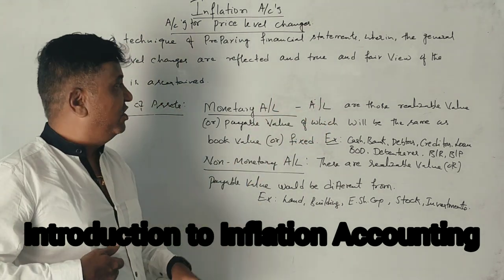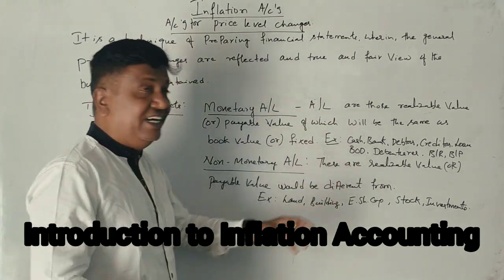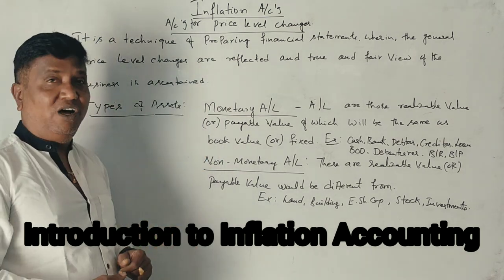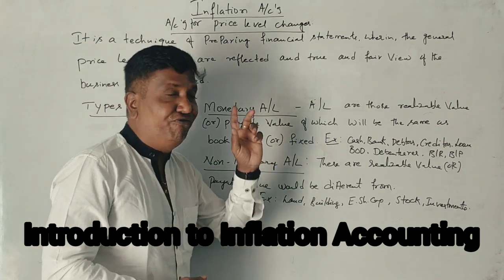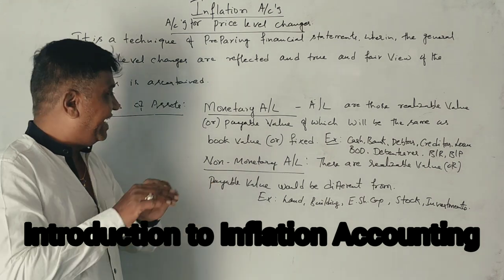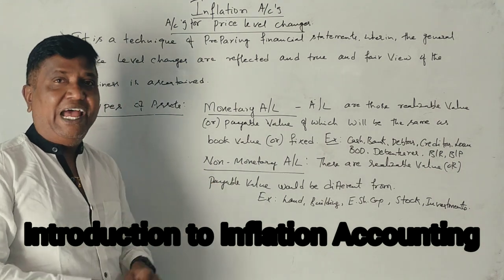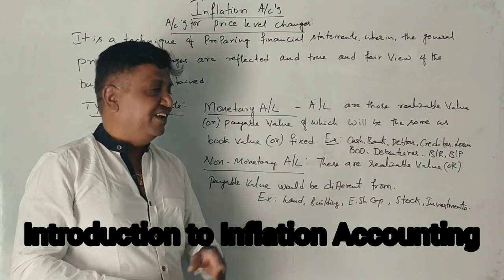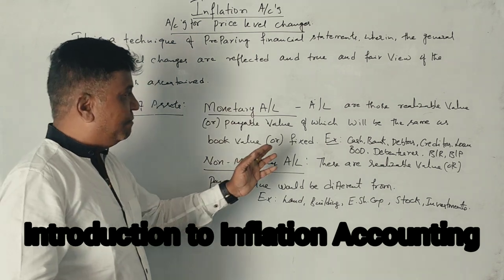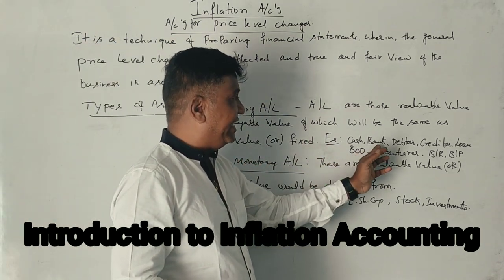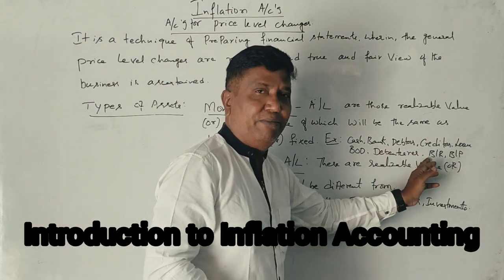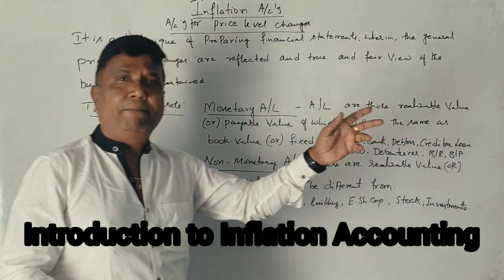Monetary assets and liabilities are those whose realizable value or payable value will remain the same as the book value. Examples include cash, cash at bank, debtors, creditors, loans, bank overdraft, and debentures — these are monetary items.